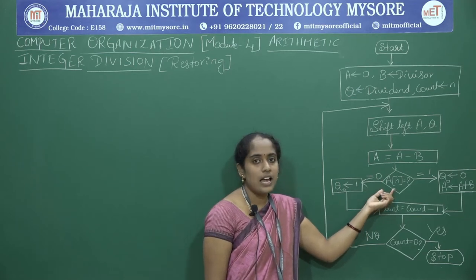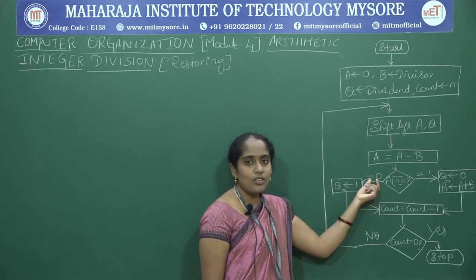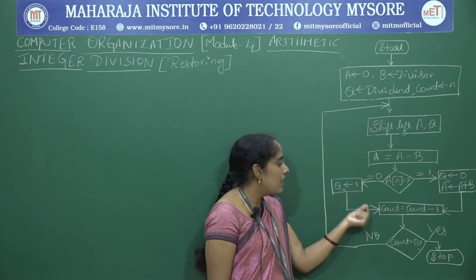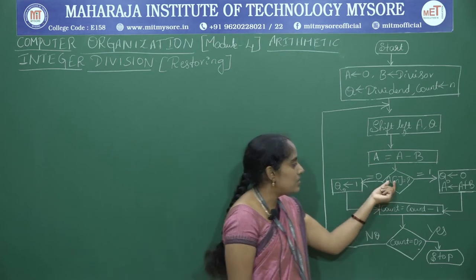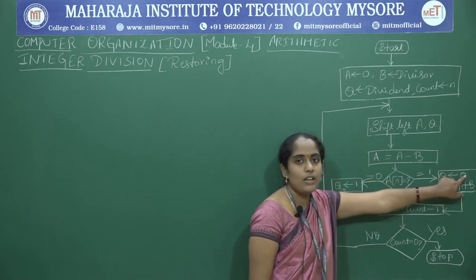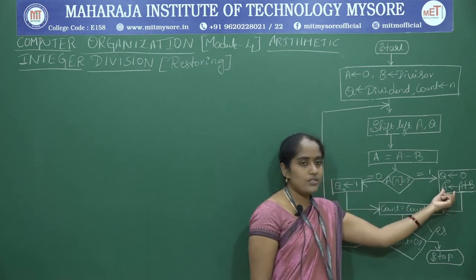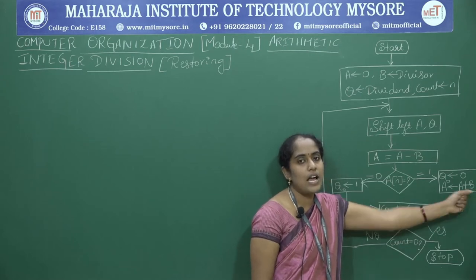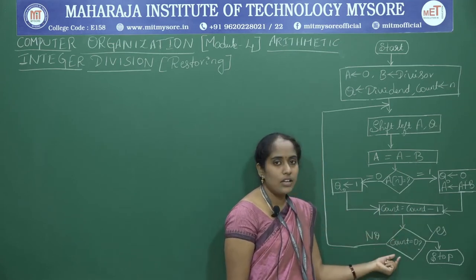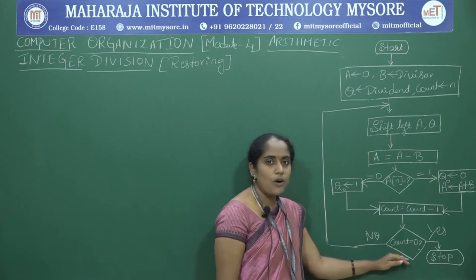Next, check the sign bit of A — that is, the most significant bit of A. If it is 0, set Q0 to 1, then decrement the count value. Otherwise, if the sign bit of A equals 1, set Q0 to 0, then restore the value of A using the formula A equals A plus B. Add B to A and store the result in A, then decrement the count value. If count reaches 0, stop. Otherwise, go back to step 3 and repeat.